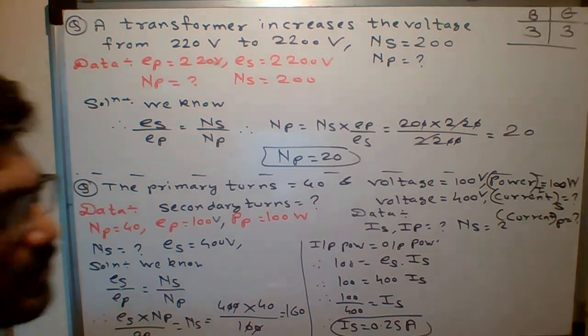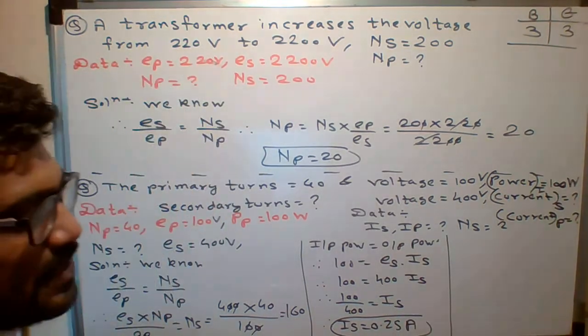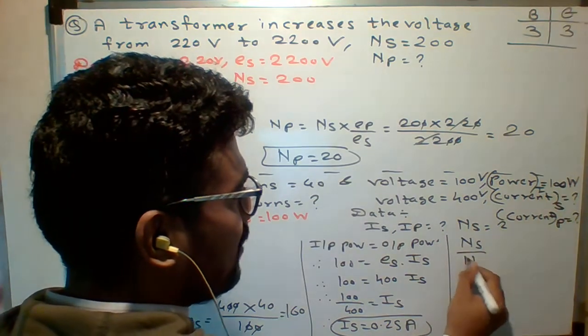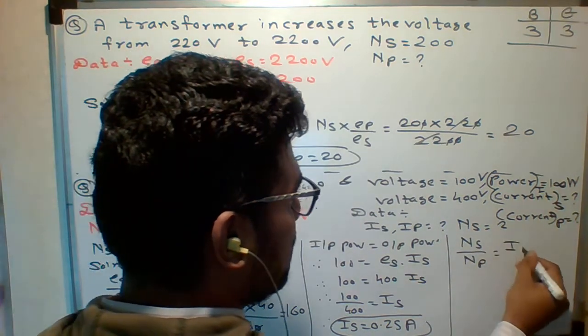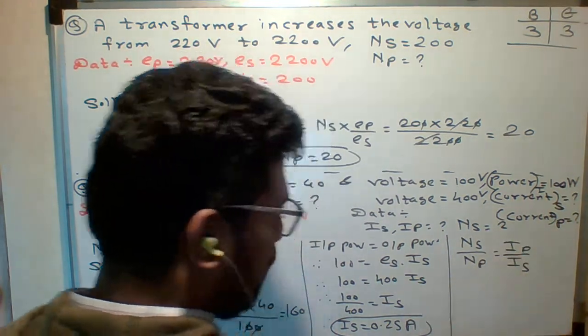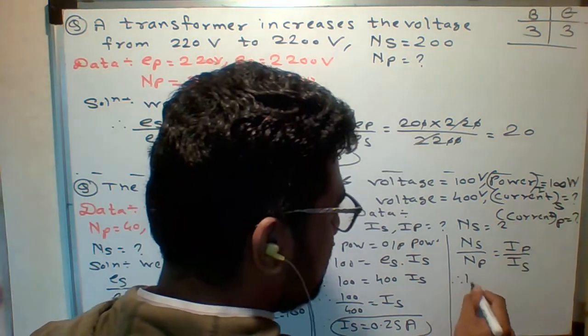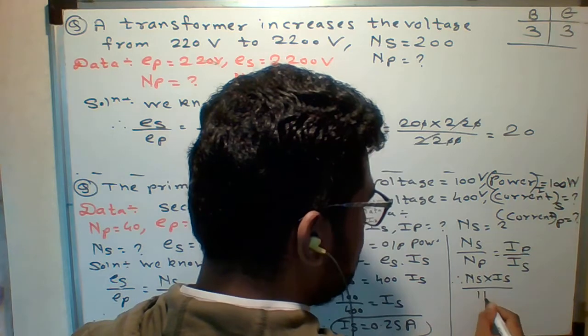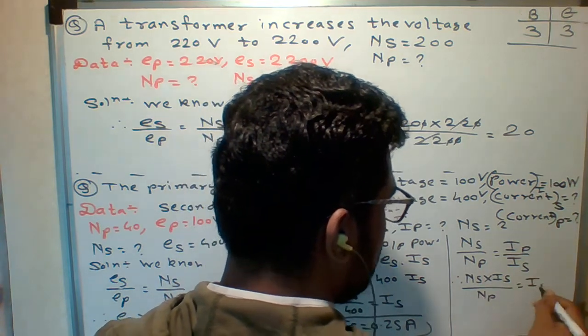Now students. IS we know. How to find IP. So students. We know the formula for NS upon NP. What is the formula. IP upon IS. What I need. IP. So what is IP is given by. NS multiple of IS upon NP. So who will tell me the value of IP. Come on.